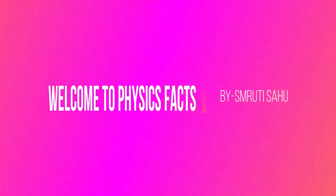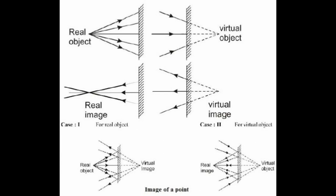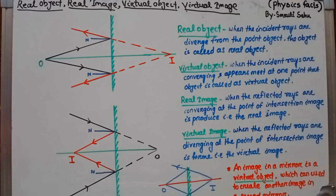Hello students, welcome to our YouTube channel FijiSpect. Today we discuss about real object, virtual object, real image and virtual image. Object is of two types: real object and virtual object. Image is also of two types: real image and virtual image. We will go through each topic one by one.